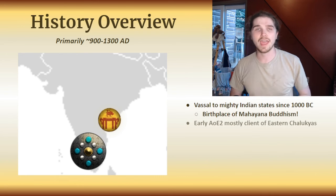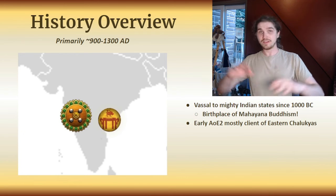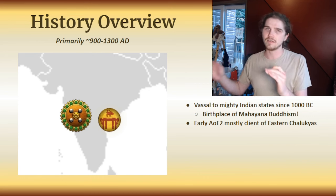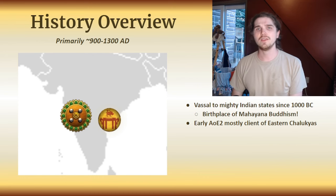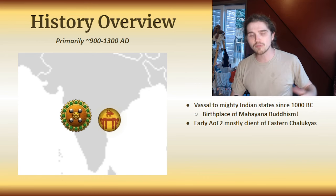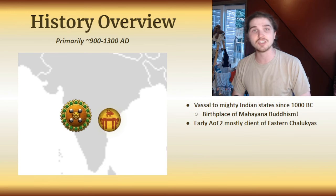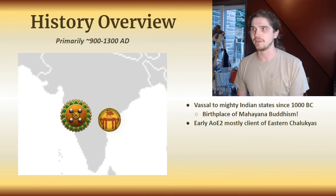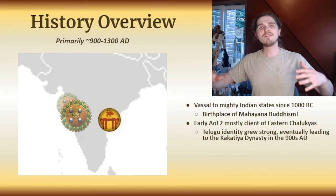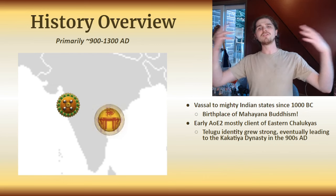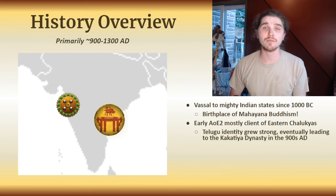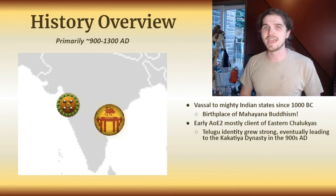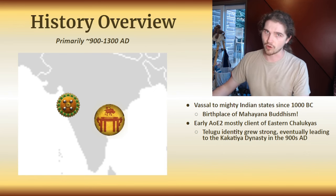During the AoE2 relevant time frame, or at least the first portion from about 400 AD to around 800 AD, the Telugu were mostly vassals of the eastern Chalukya peoples, here represented by the Gujaras, though that is not at all accurate. However, during especially the latter part of their subservience to the Chalukyas, Telugu identity began to grow very, very strong.